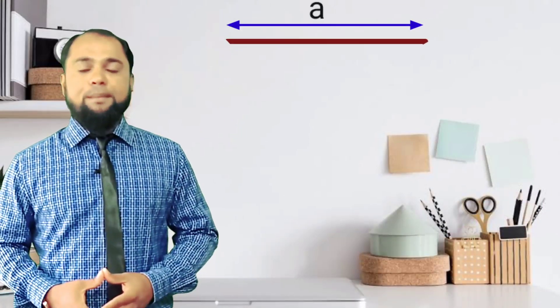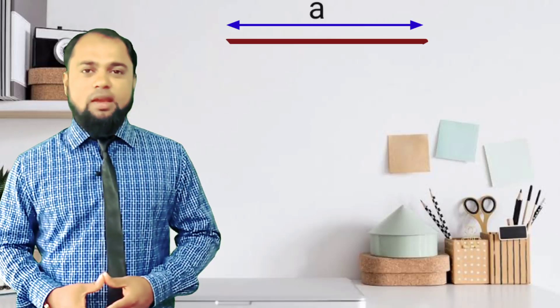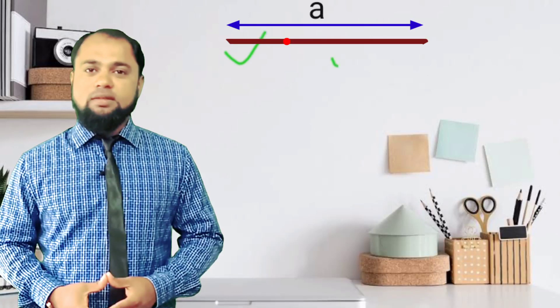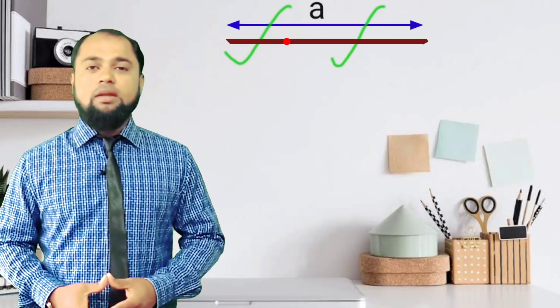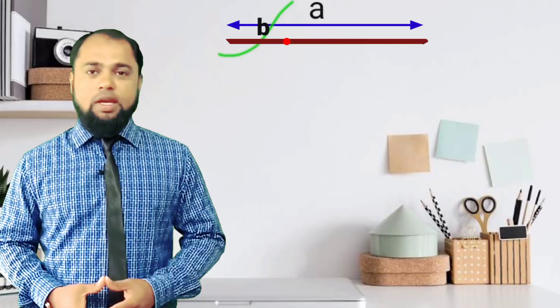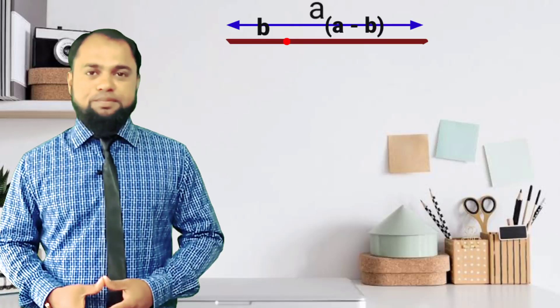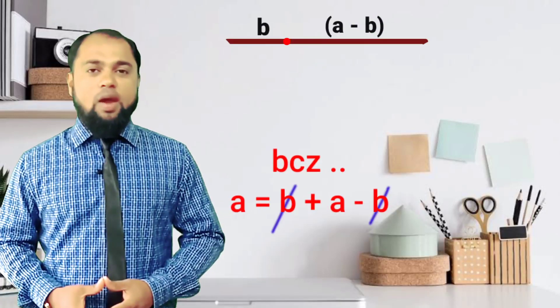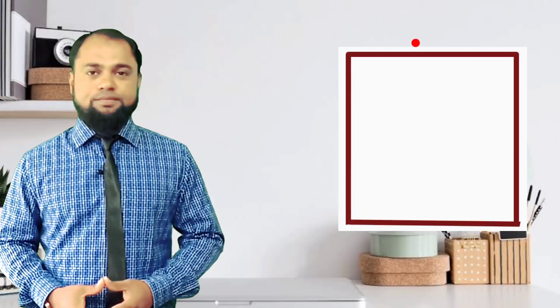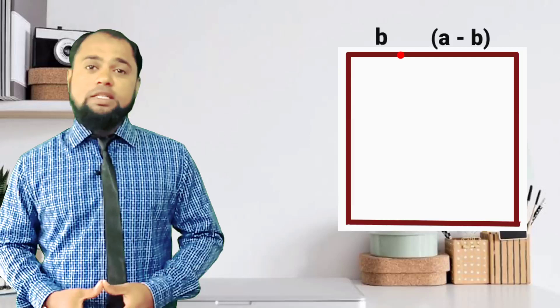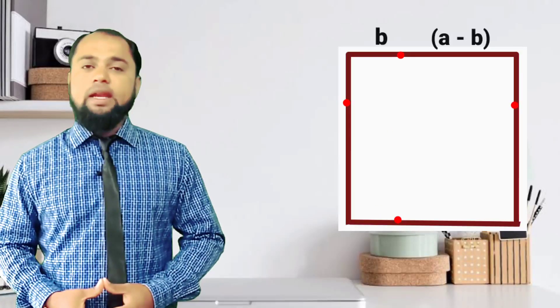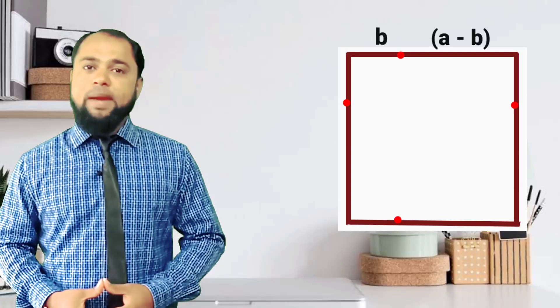Let's study that. Consider a line of length a and mark a point on it. There are two segments: the shorter segment will be of length b, meaning the remaining longer segment will be of length a minus b. Now prepare a square of side a.